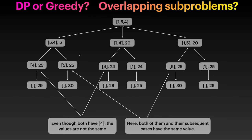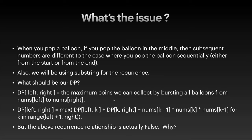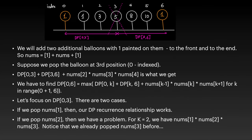The issue comes from nums[k-1] * nums[k] * nums[k+1]. Here's my example: nums = [1, 3, 1, 3, 5, 8, 10], and then we put two additional balloons with value 1 on each end, so nums becomes [1] + nums + [1]. Say we pop the balloon at the third position (zero-indexed) — that's 5. Then we look at dp[0][3] and dp[3][6], where 0 and 3 are exclusive endpoints.